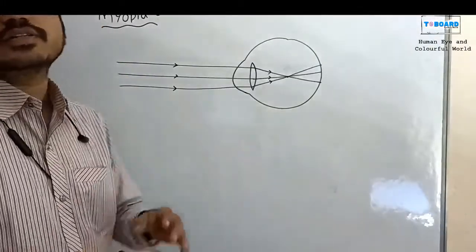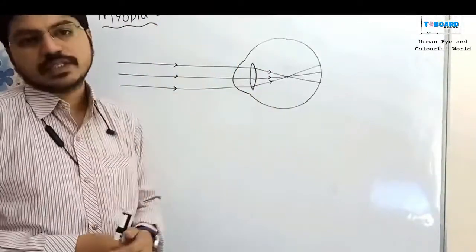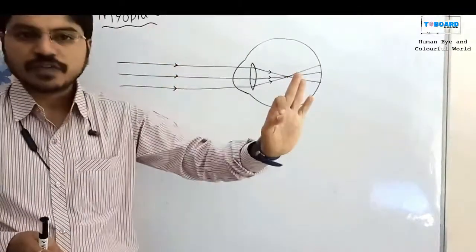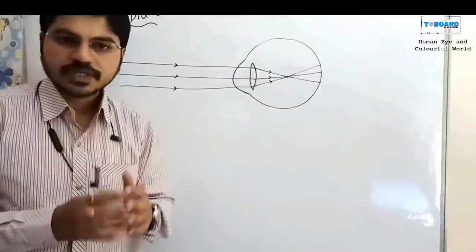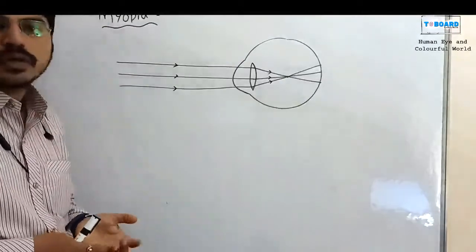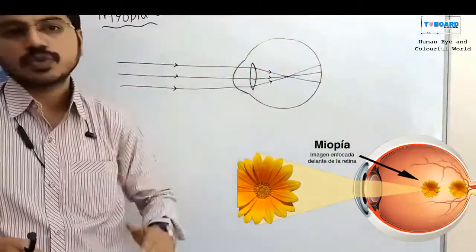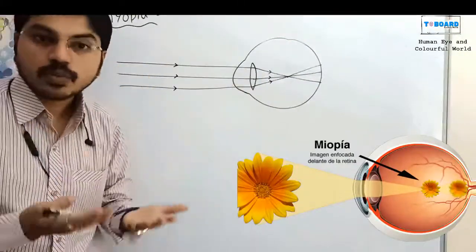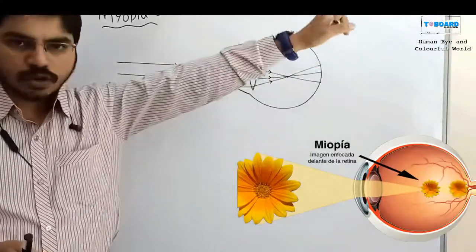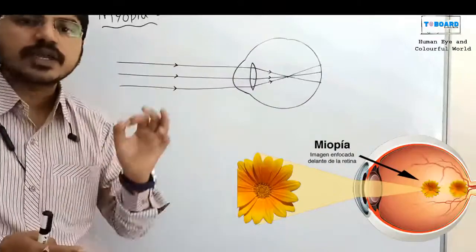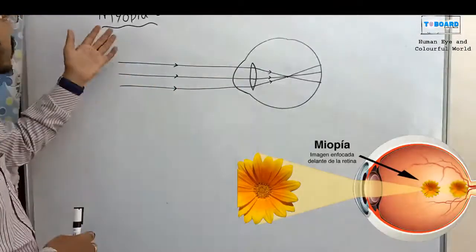Now we discuss eye defects. There are three types: myopia, hypermetropia, and presbyopia. Myopia — also called near-sightedness — is when a person cannot see distant objects but can see nearby objects clearly.